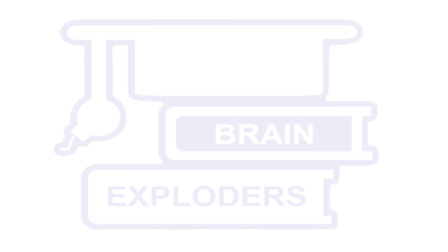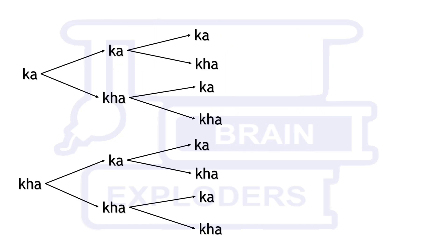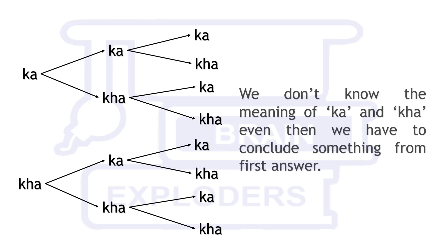We can have two possible answers of each question. So we have eight outputs which are sufficient to determine the identities of God. But if we could not conclude anything from first question as we do not know whether he is saying yes or no then it will become impossible because after that only four outputs are left.